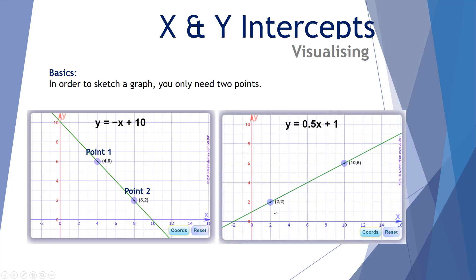Likewise, if I had the point (2, 2) — an x of 2 and a y of 2 — and (10, 6) — an x of 10 and a y of 6 — I can get a ruler, draw a line, and I have an accurate sketch of that particular linear equation.